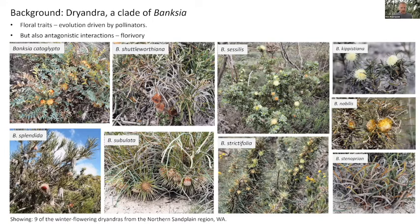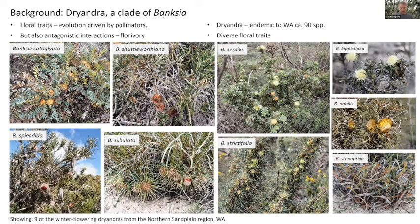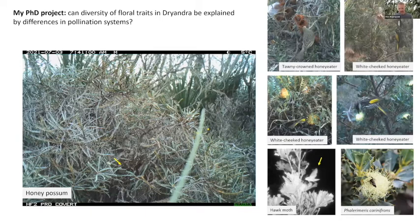My PhD project investigates pollination ecology in a group of banksias called the Dryandras. They used to be considered a separate genus, but they are a radiation within Banksia and are now treated as a clade — technically a series within that genus. There are about 90 species, all endemic to Western Australia, and they are extremely diverse in their floral traits. My main focus is the vertebrate pollinators: nectarivorous birds and small mammals such as the honey possum. I'm also looking at insects and hoping to test whether differences in floral traits among the Dryandras can be explained by their putatively different pollination systems.